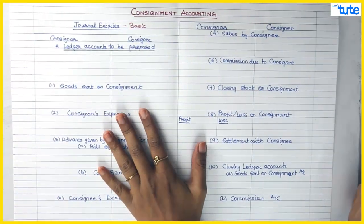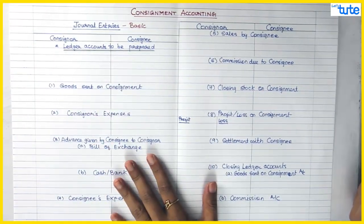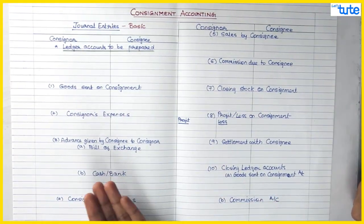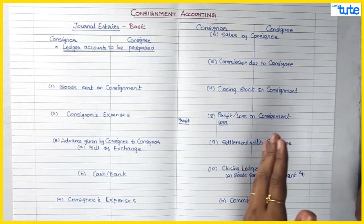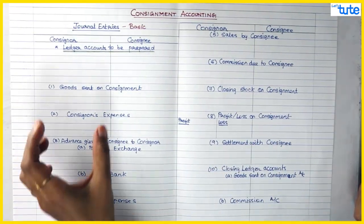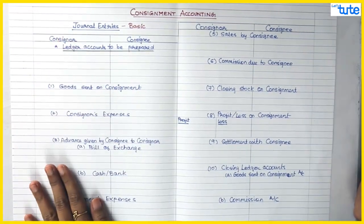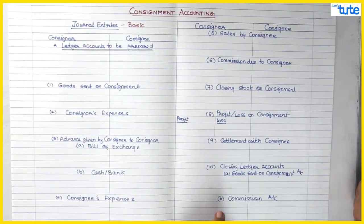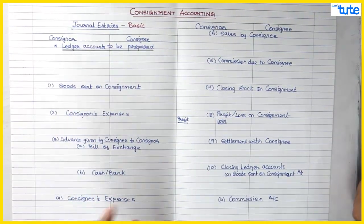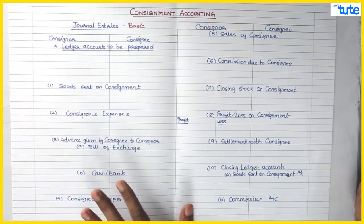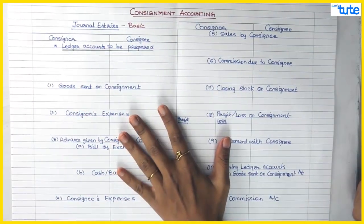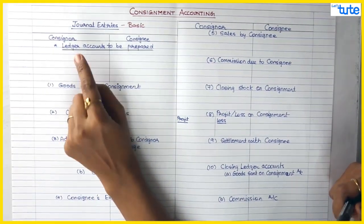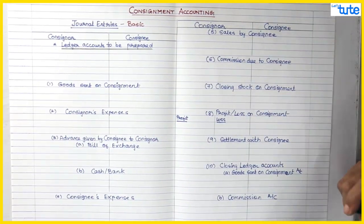So we will start with the journal entries. These are the basic entries of Consignment Accounting. You need to know the journal entries because they might ask you journal entries or they might ask you the ledger accounts also. I have prepared two columns: Consigner and Consignee. This is the books of Consigner and this is the books of Consignee. I have written all the 10 steps we have seen in the previous video. But first, we will see what are the necessary ledger accounts to be prepared in the books of Consigner and Consignee.